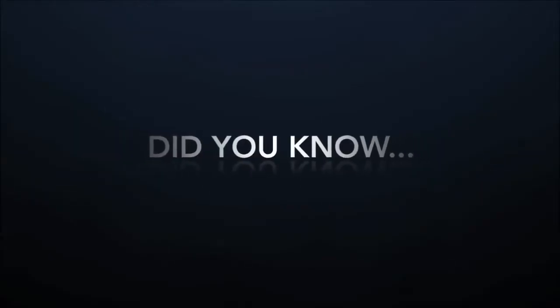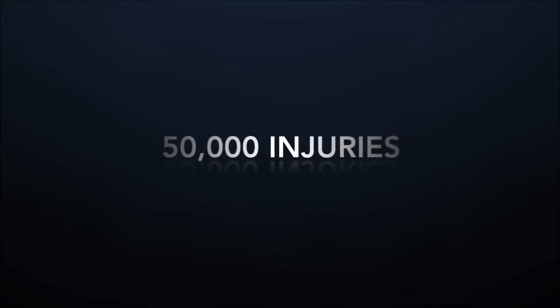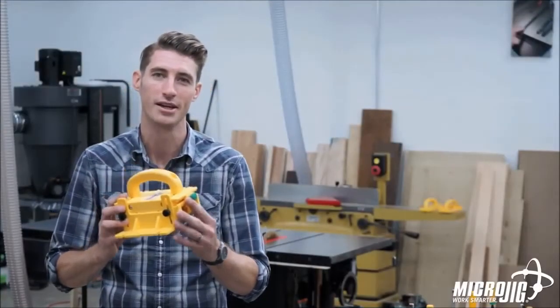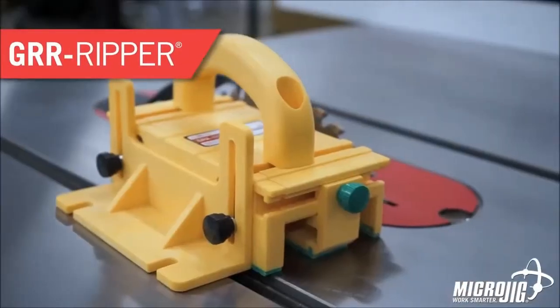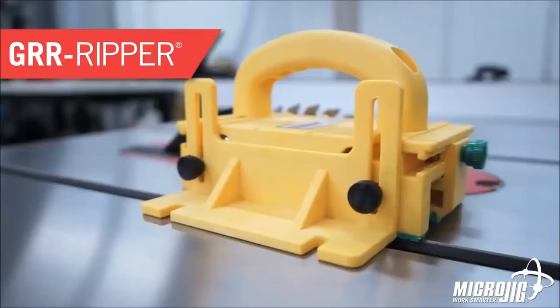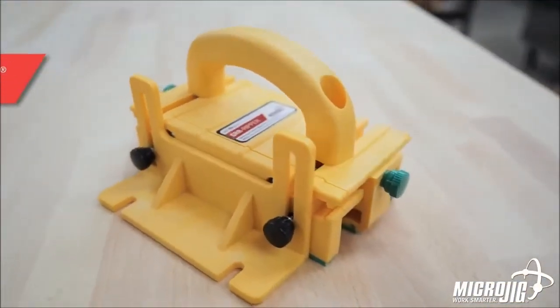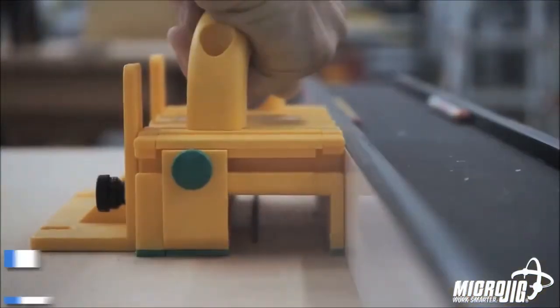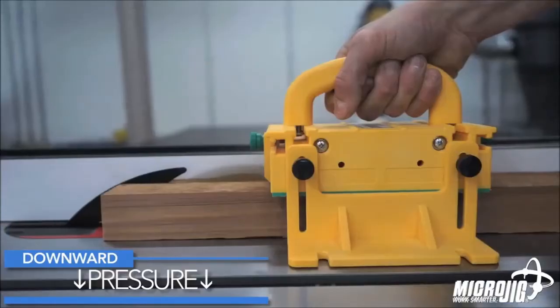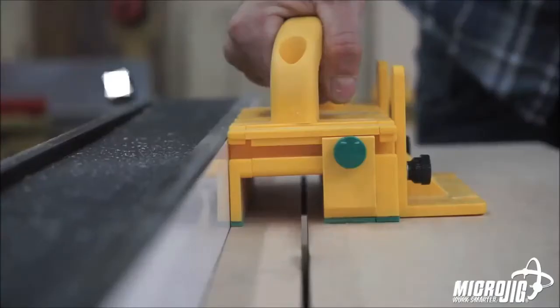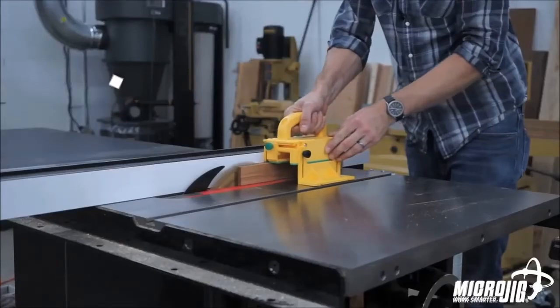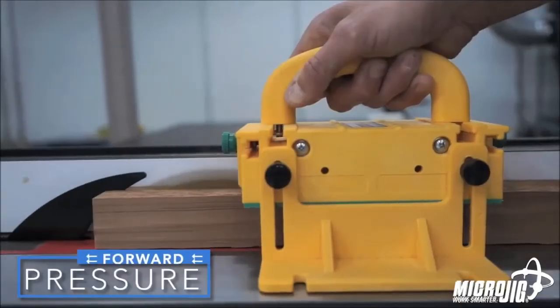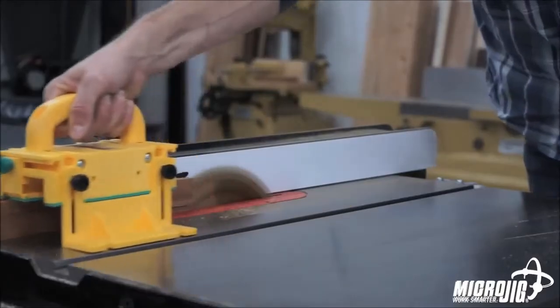With over 50,000 injuries per year, the table saw is among the most dangerous tools in the workshop. MicroJig introduces the Gripper 3D push block, protecting your hands and preventing kickback like never before. The Gripper gives you three essential forces for precision control and safety: downward pressure keeps your workpiece firmly down on the table, virtually eliminating kickback; inward pressure keeps your workpiece tight against the fence to avoid burning; and forward pressure to advance your workpiece while keeping your hands safe and clear of the blade.